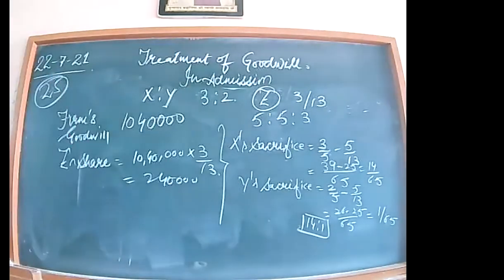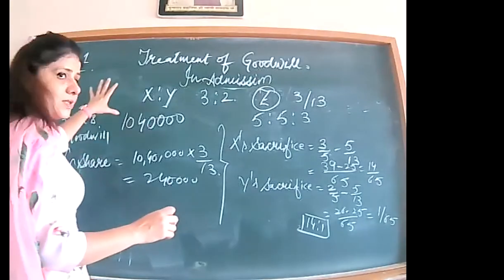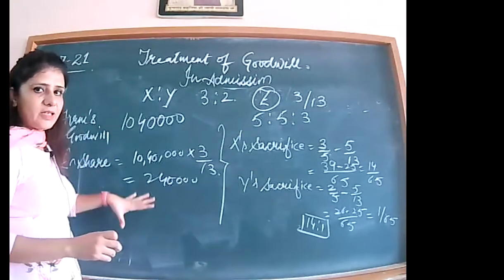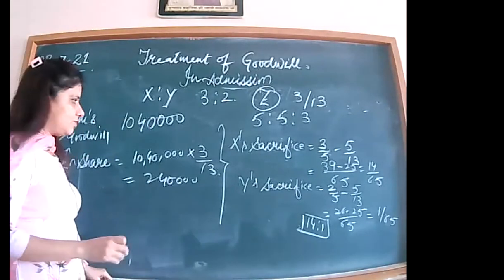The sacrificing ratio is 14 is to 1, confirmed from the book as well. Now I am erasing to create space for the journal entries — we will prepare the format and start passing the entries.